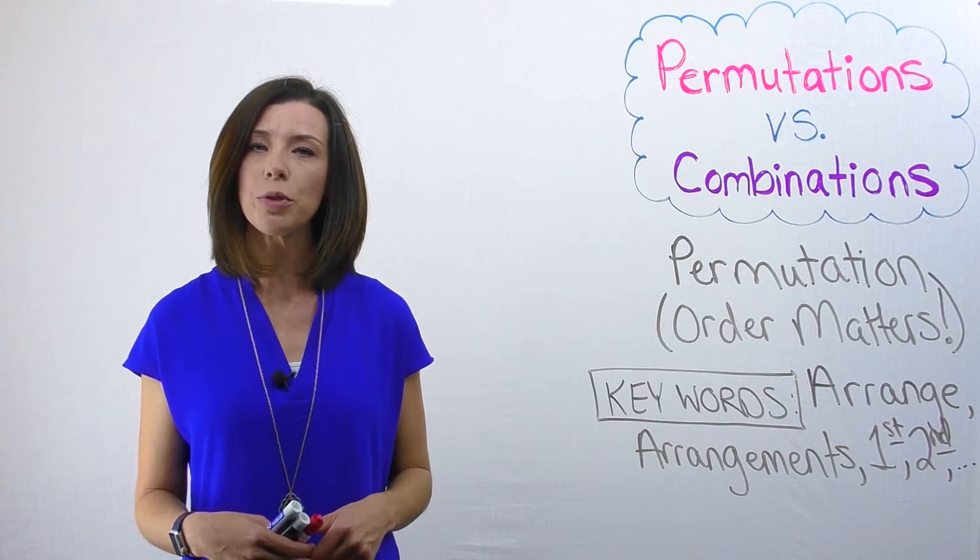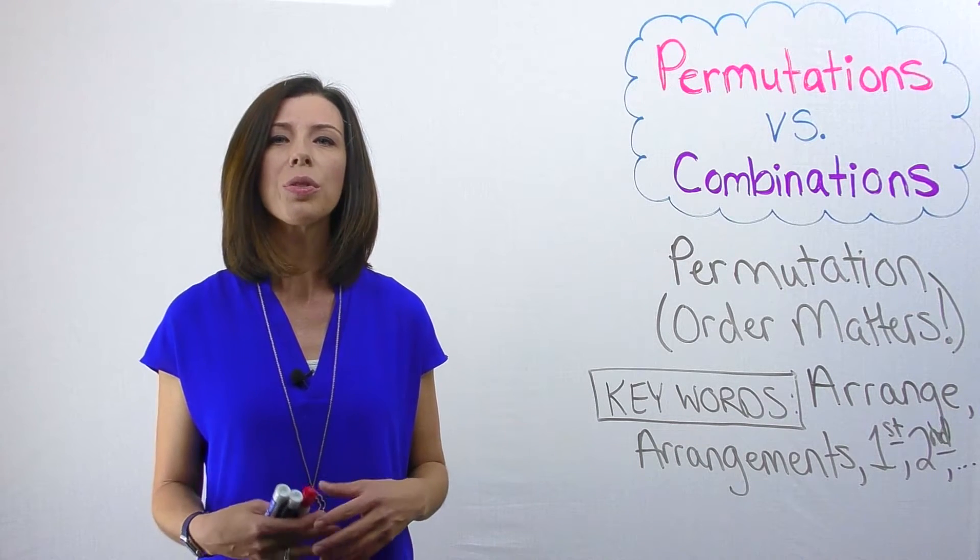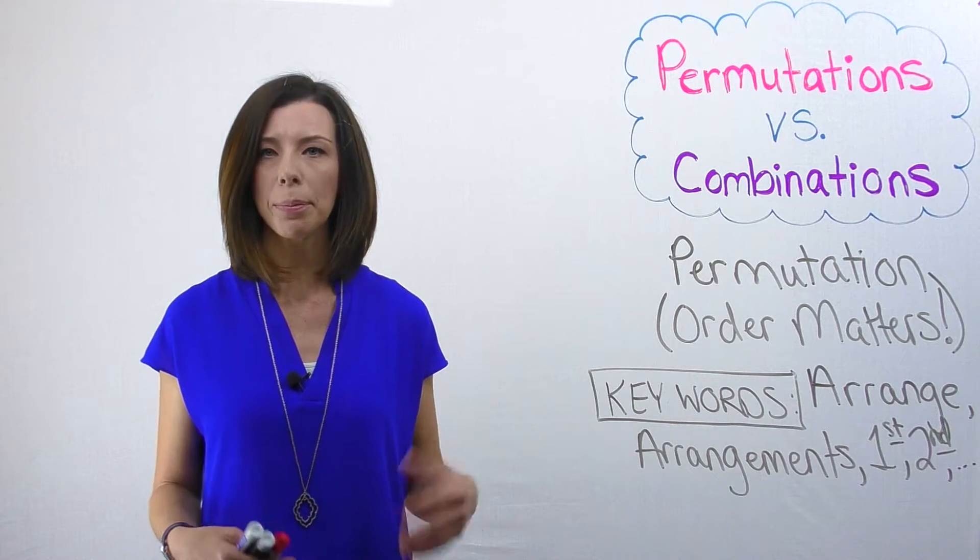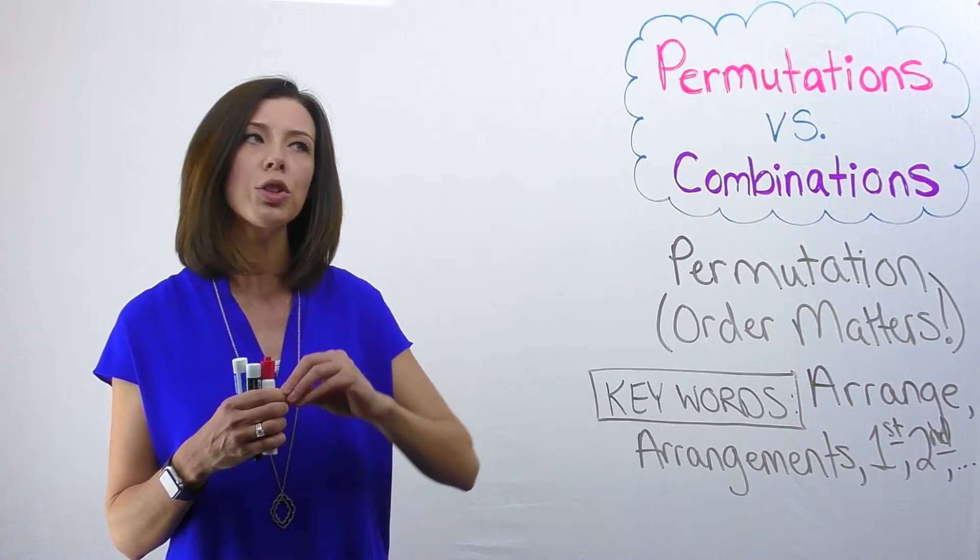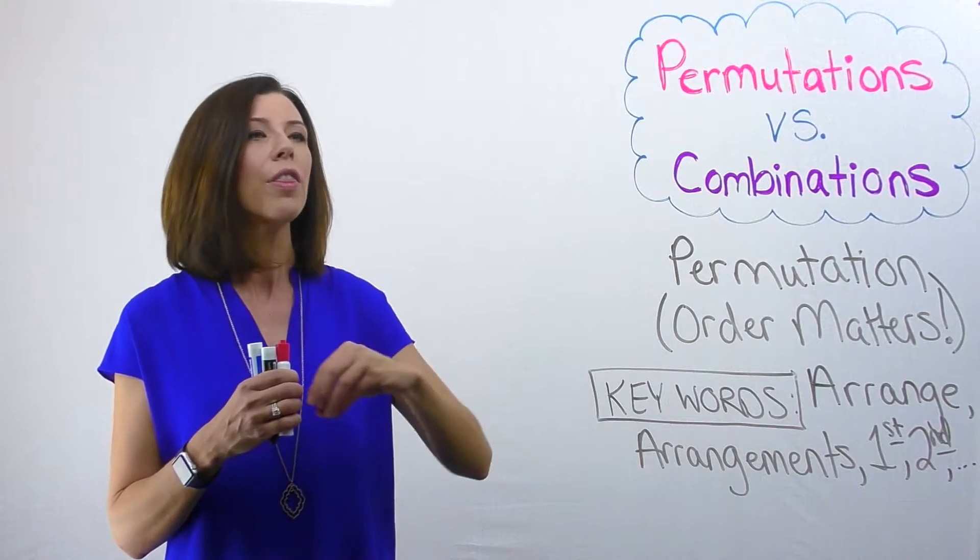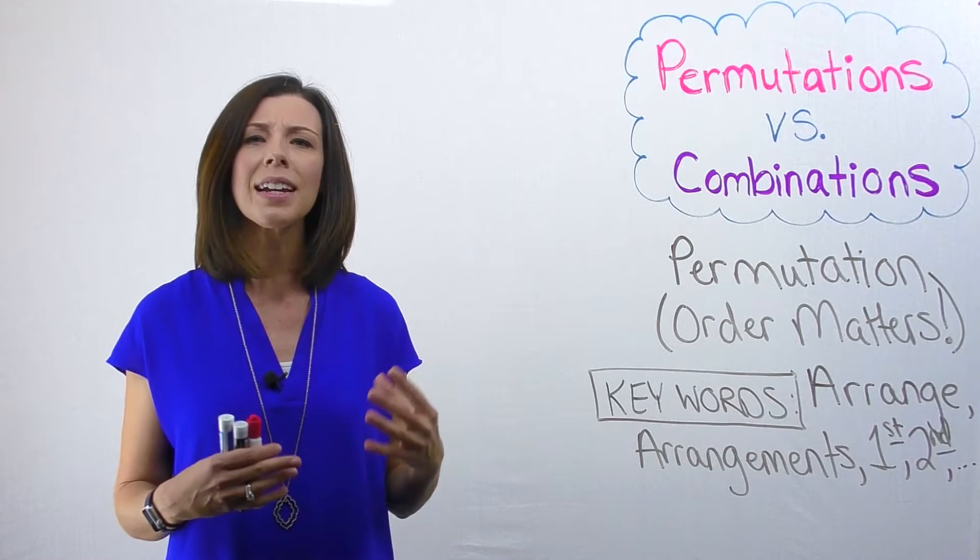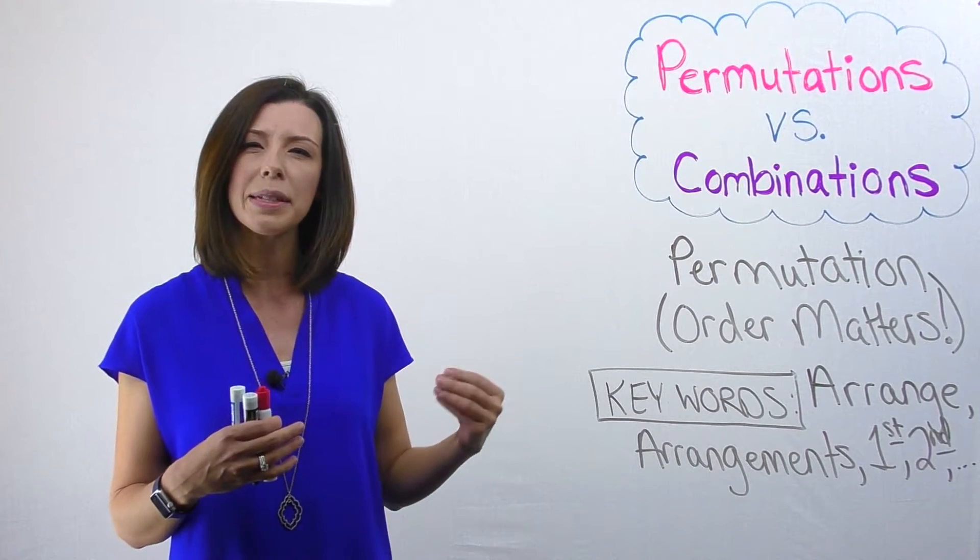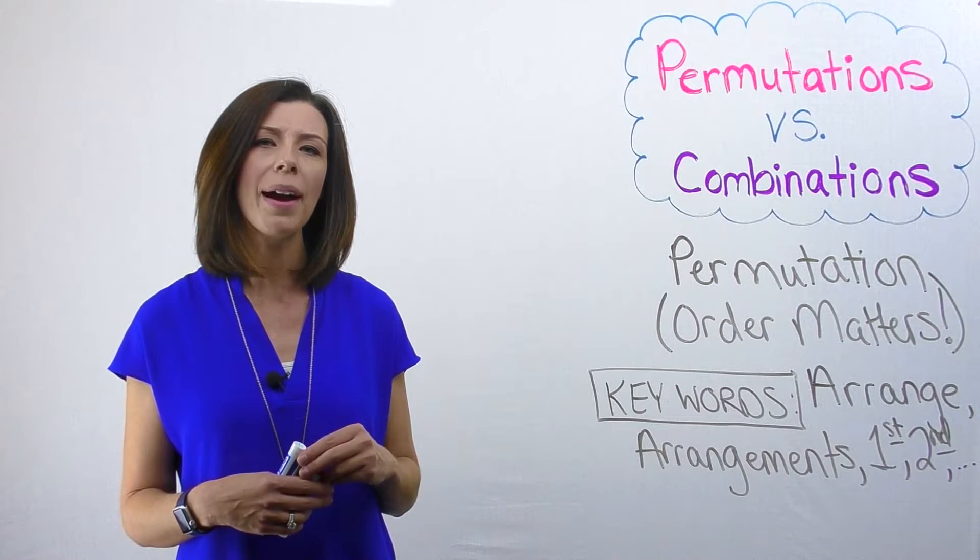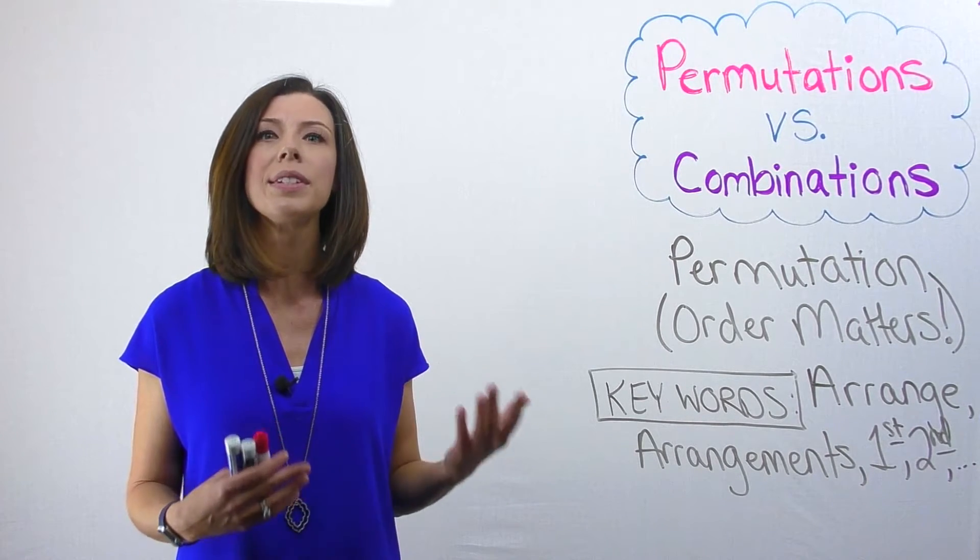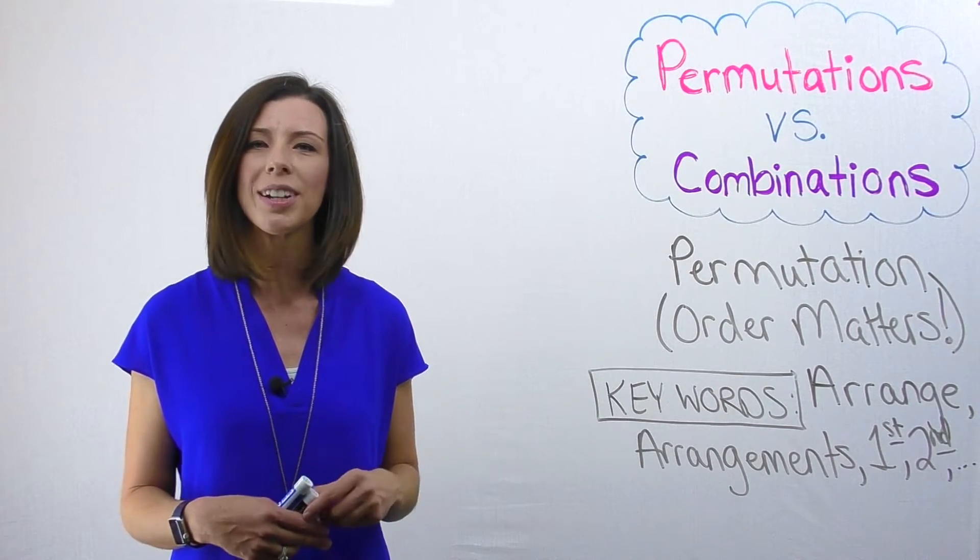Permutations are an ordered arrangement where nothing is ever used more than once. So this is the idea of not replacing it. When I pick someone to be my president, that person is no longer eligible to be the vice president. Then that person is no longer eligible to be the secretary. This is that idea of without replacement, like no item is being used more than once. Also, something to keep in mind is that order of the items does make a difference, as I've illustrated in that president, vice president, secretary situation.